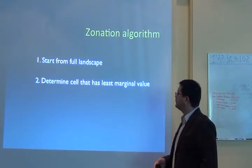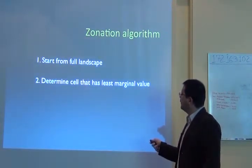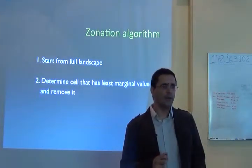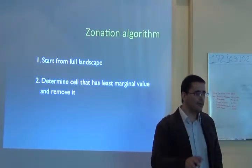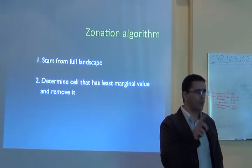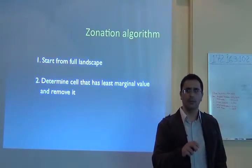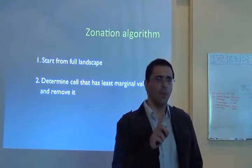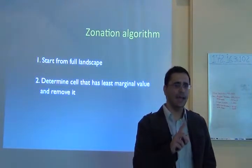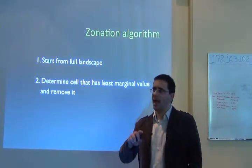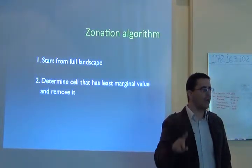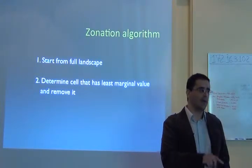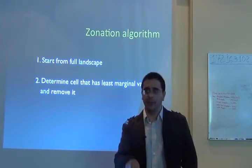You calculate or determine the cell that has the least marginal value and remove it. The marginal value is the relative contribution of that cell to the whole system. For example, if there is a species that occurs in just one cell, that particular cell has the highest contribution to the system — the species is endemic to that place.